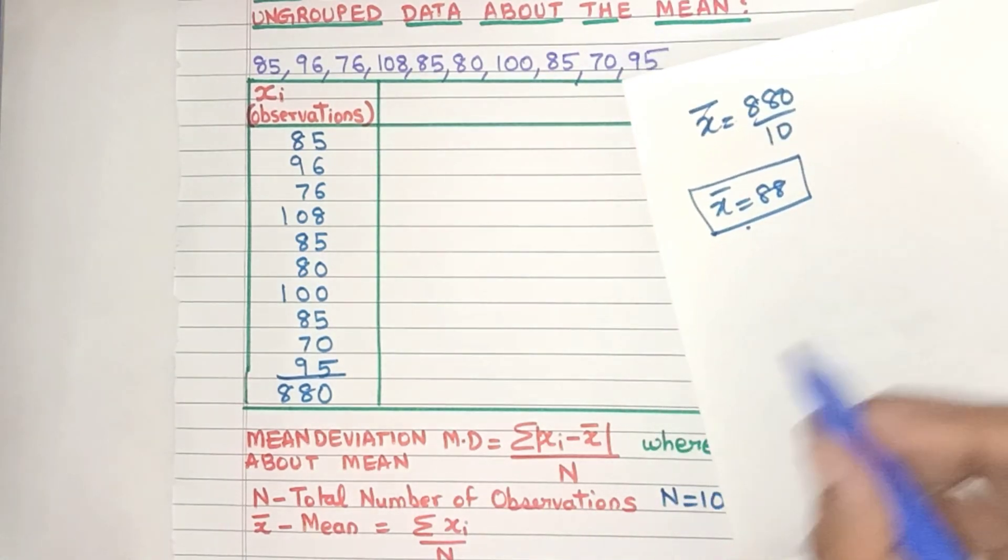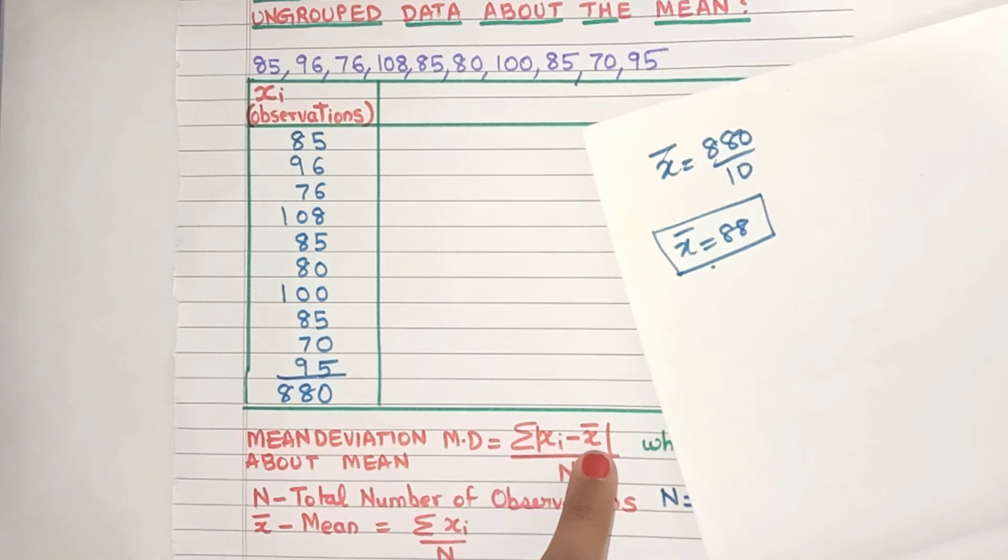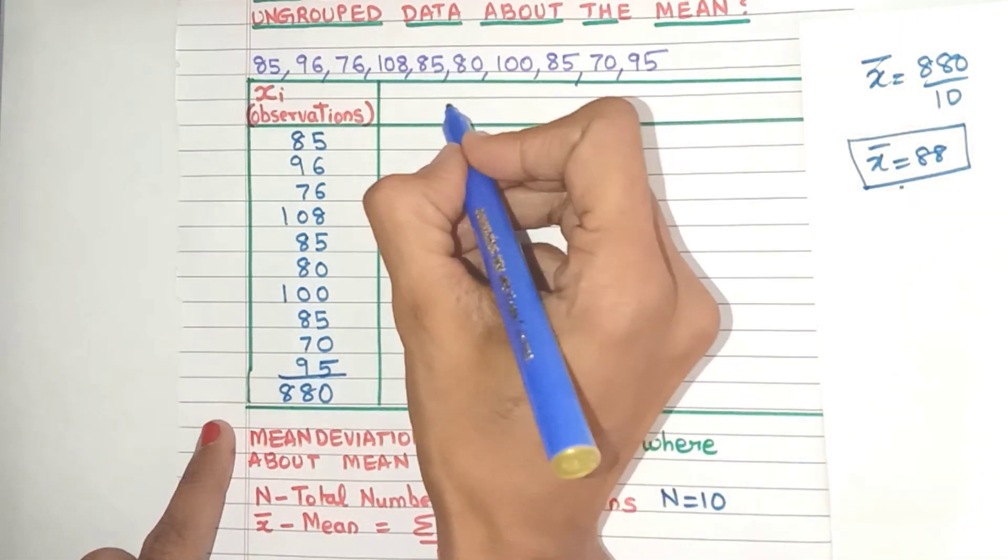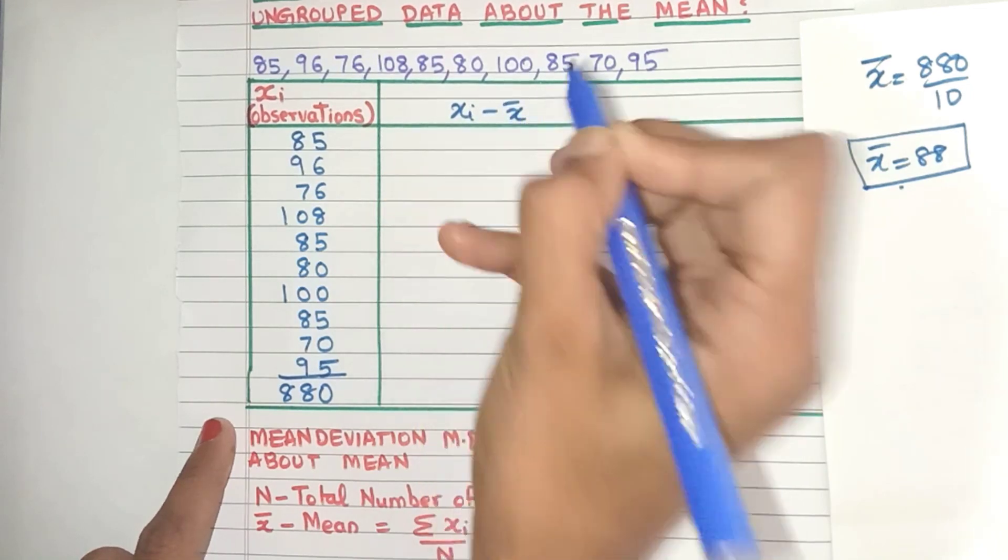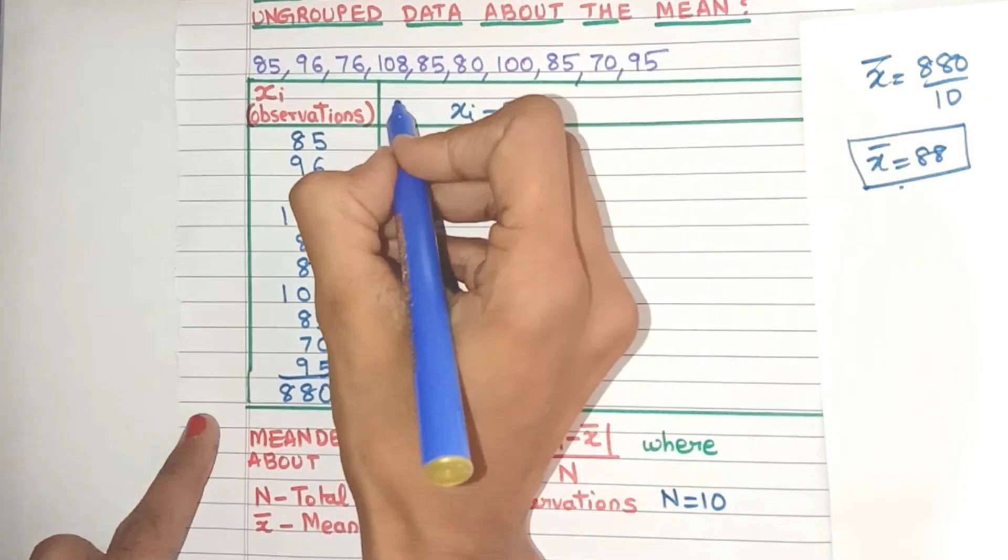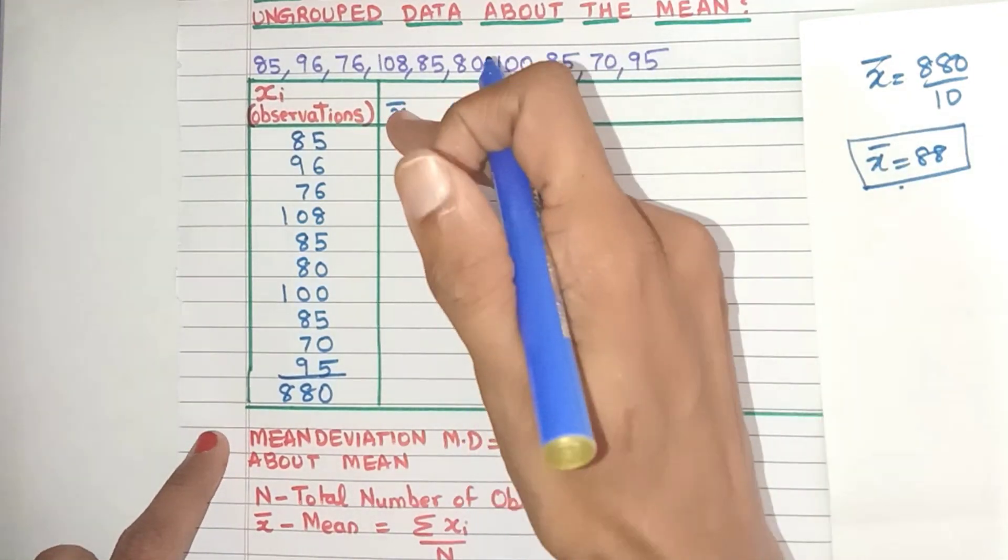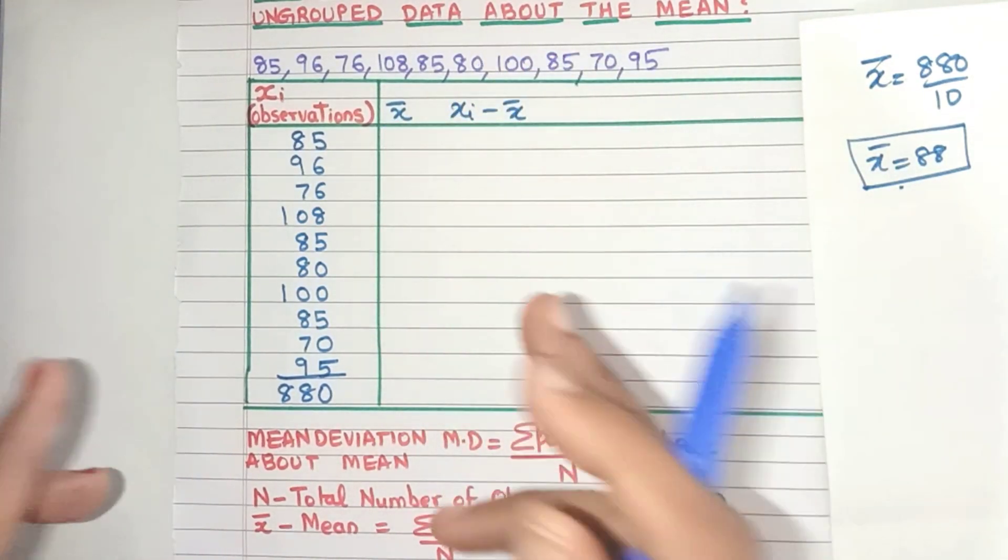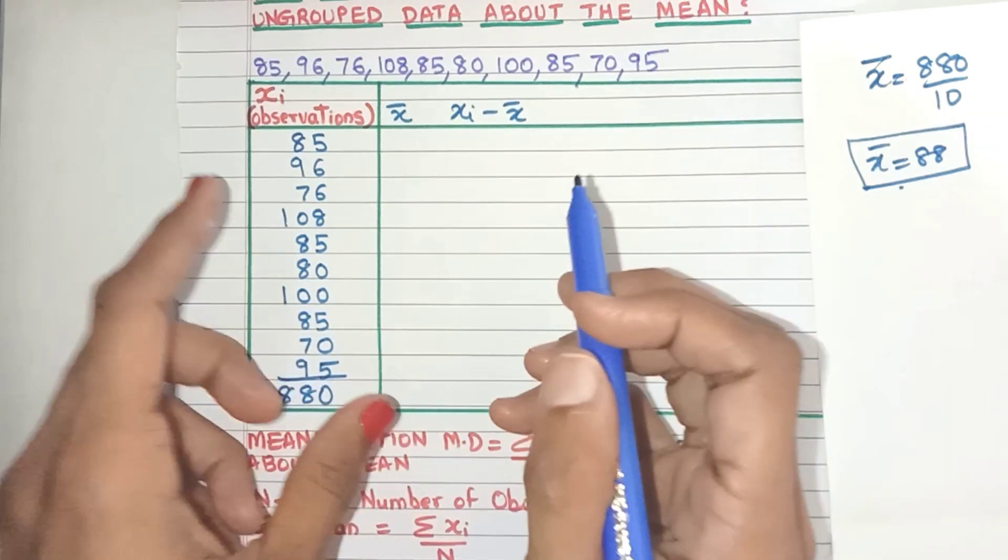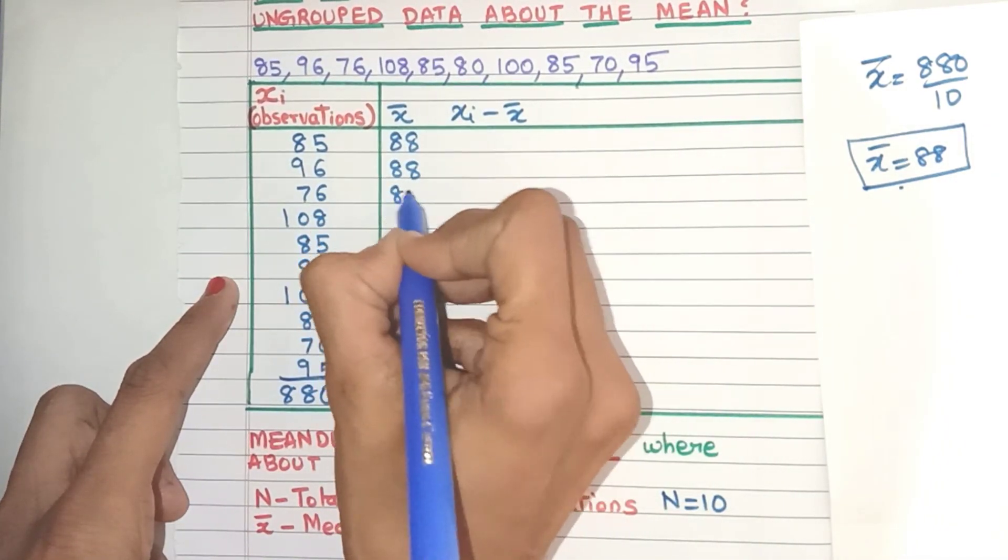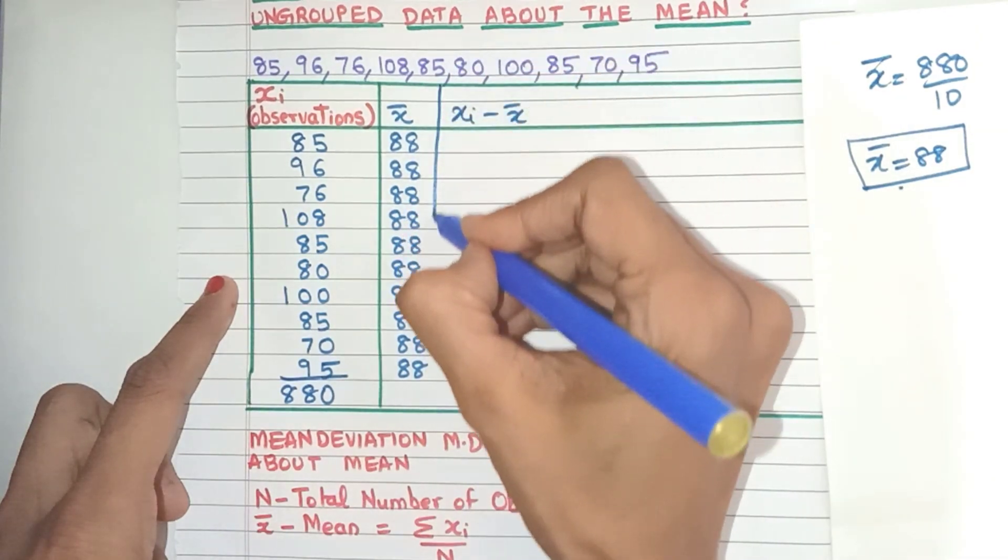Now let's again see what do we need. We need xi minus x̄. So the next column we need is xi minus x̄. But for my convenience, I'll create another column called x̄ where I'll write the mean value everywhere. I'm doing this so that my subtraction becomes easier. Let's write the mean value everywhere: 88. Now we are ready to do the subtraction.